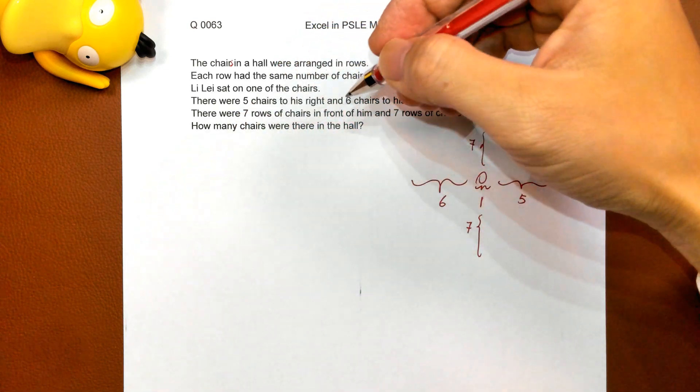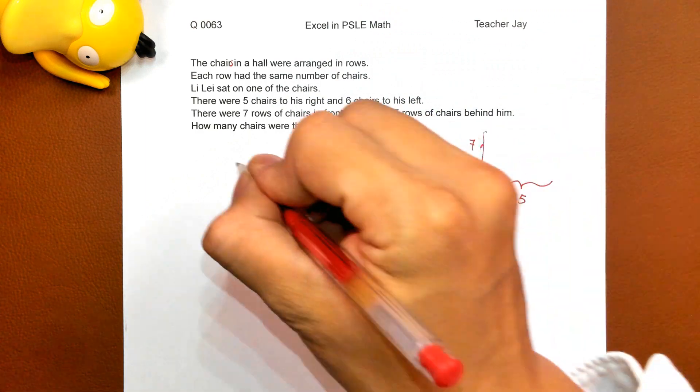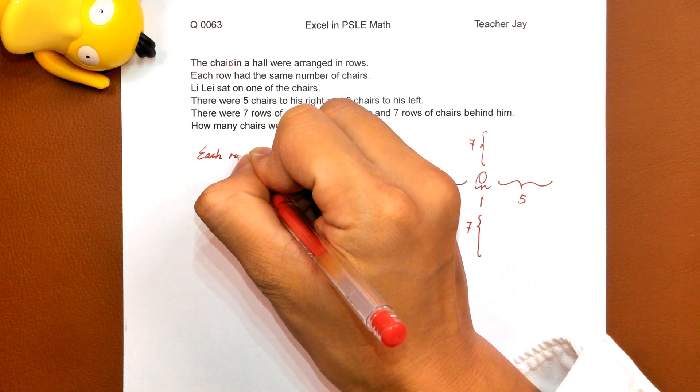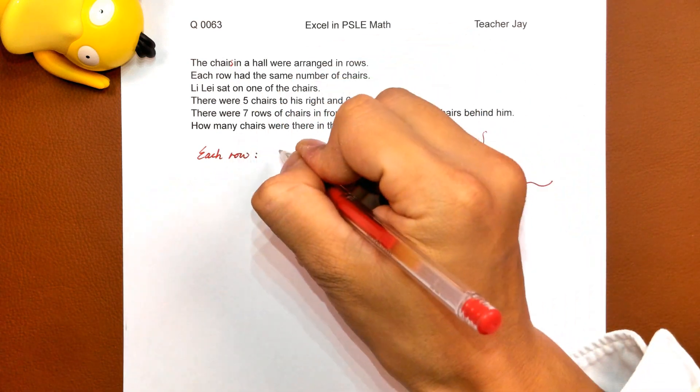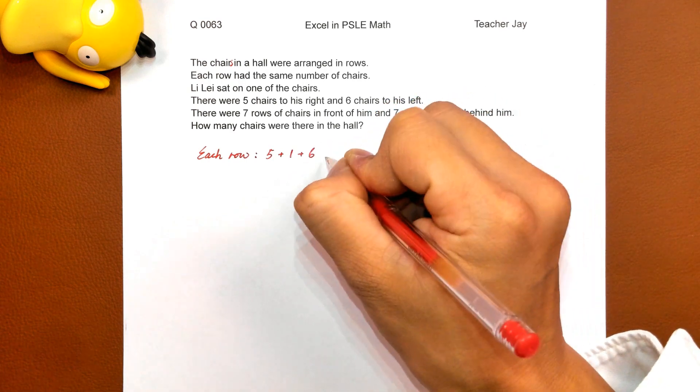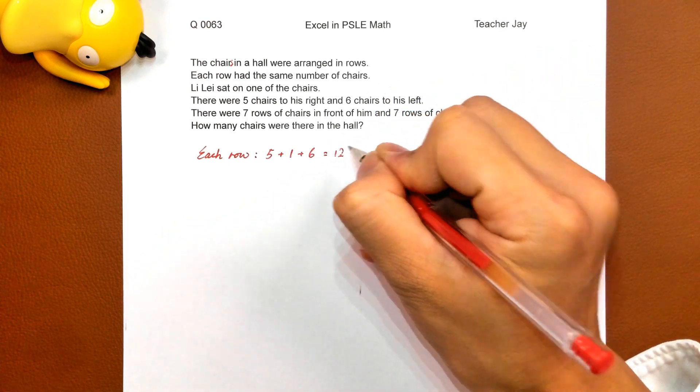So how many chairs were there in the hall? Each row: five, one, six - twelve chairs per row.